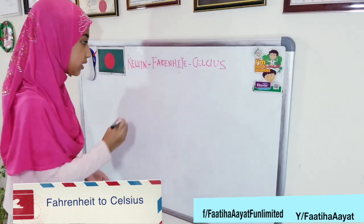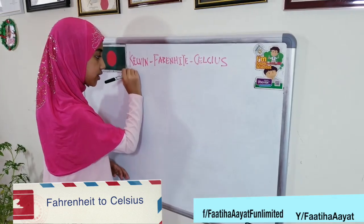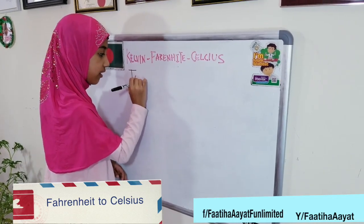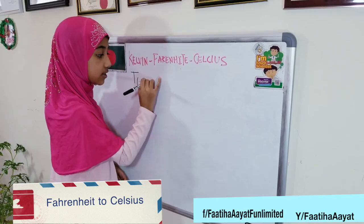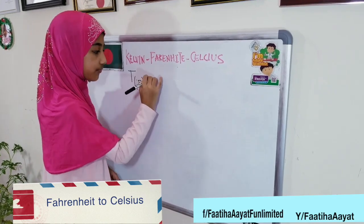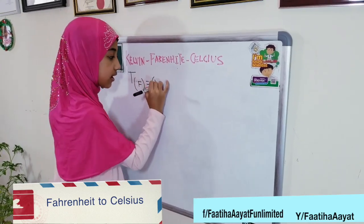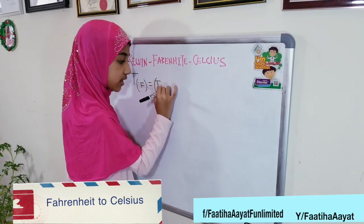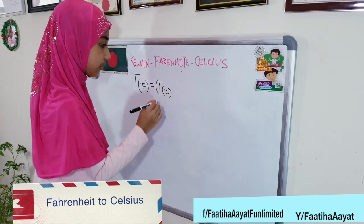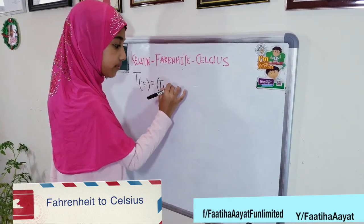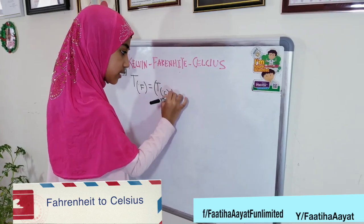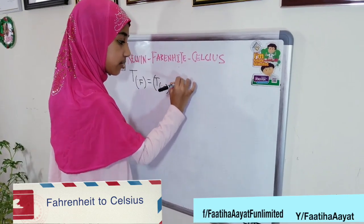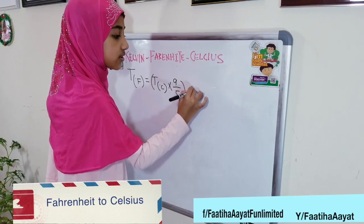The formula is that the temperature measured in degrees Fahrenheit is equal to, in parenthesis, the temperature measured in degrees Celsius, times 9 over 5, parenthesis closed, plus 32.